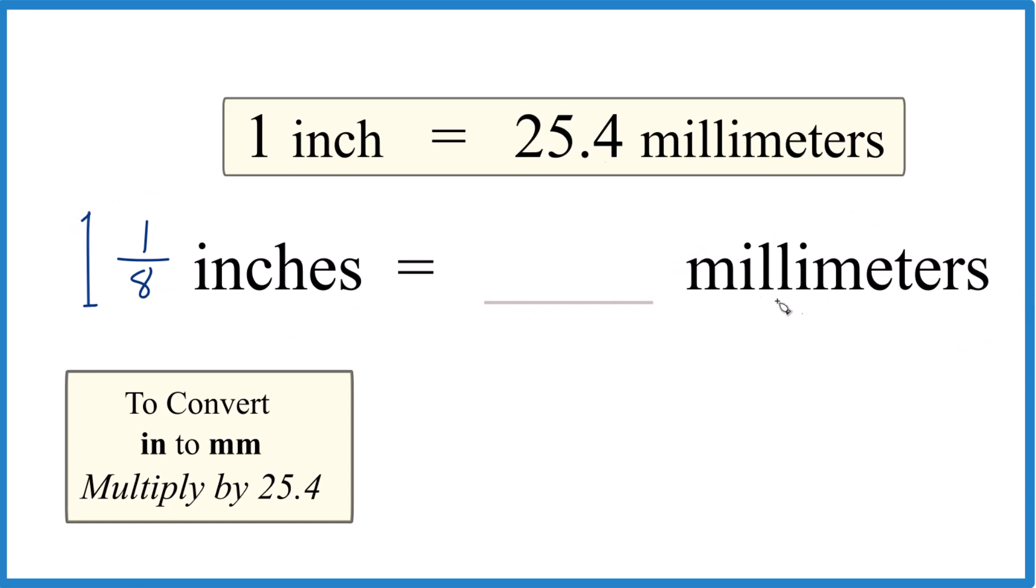The first thing you should probably do is get this to be a decimal. It's just a lot easier to work with here. So if I divide 1 by 8 on a calculator, I get 0.125. So this would be 1.125.